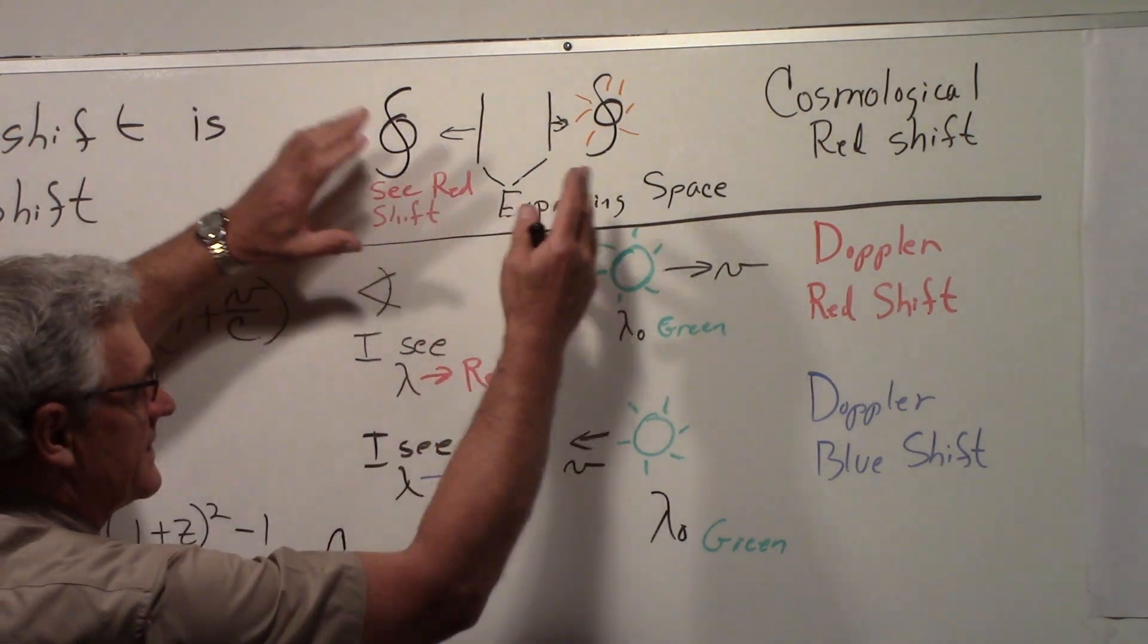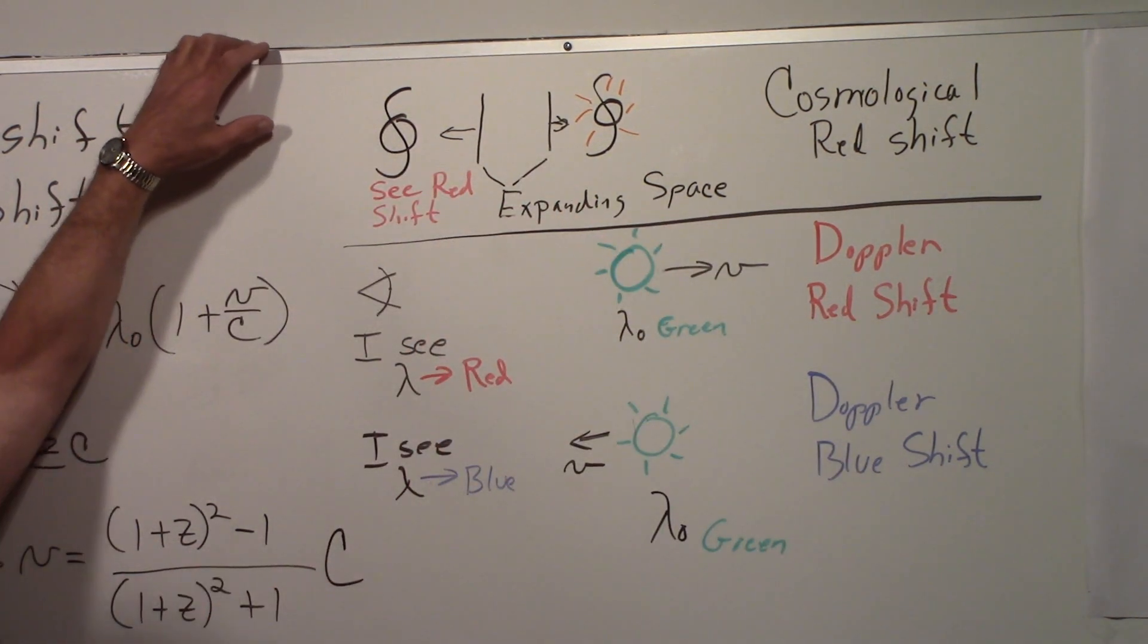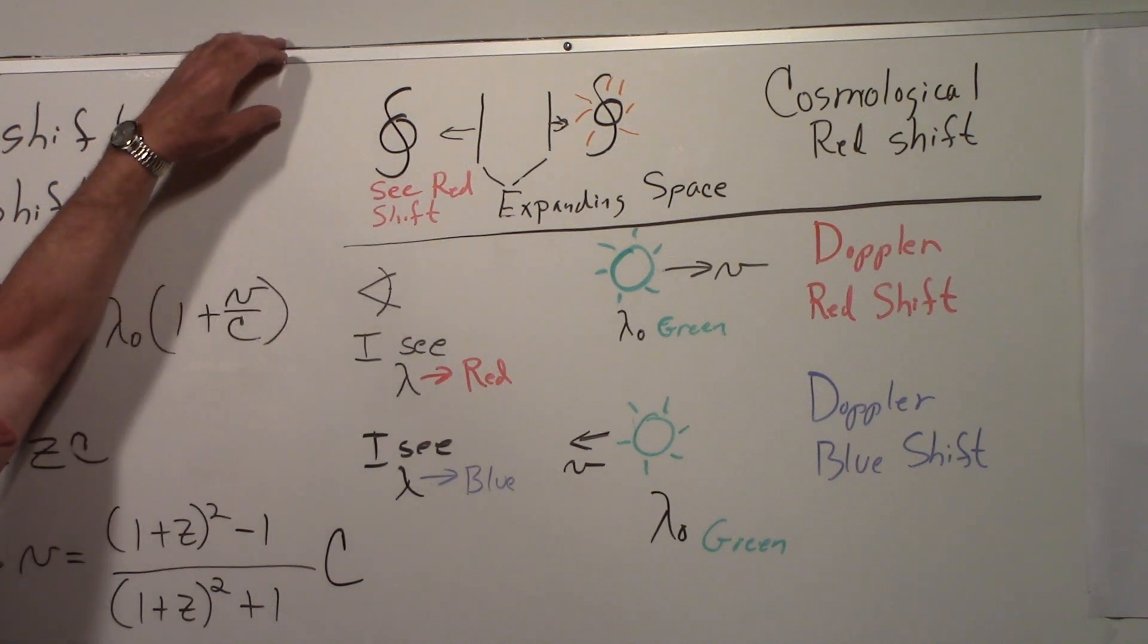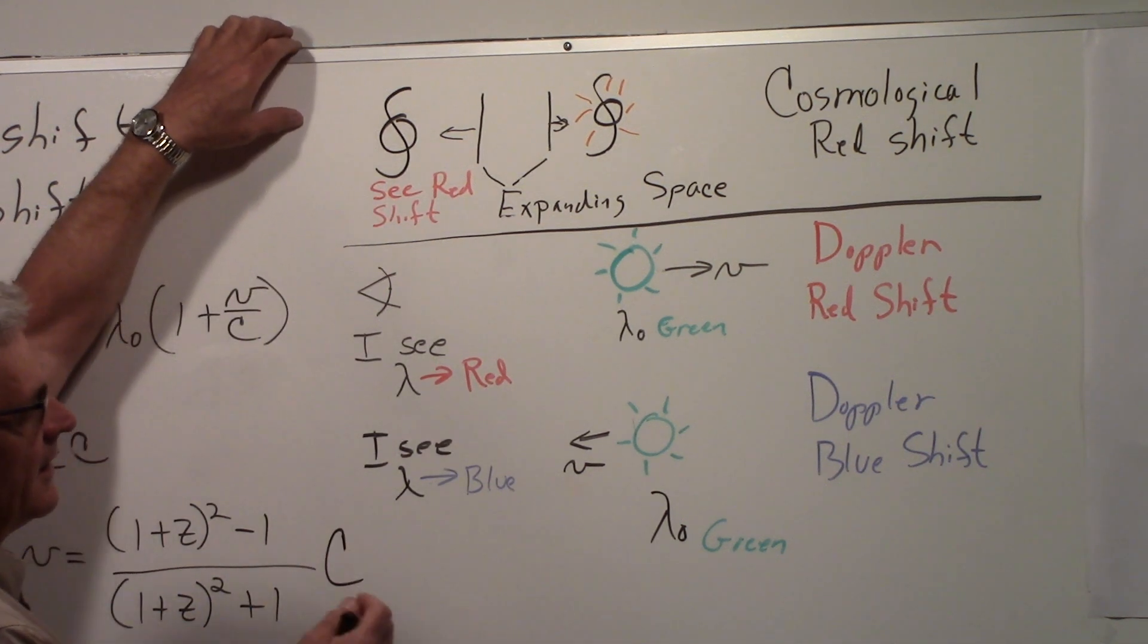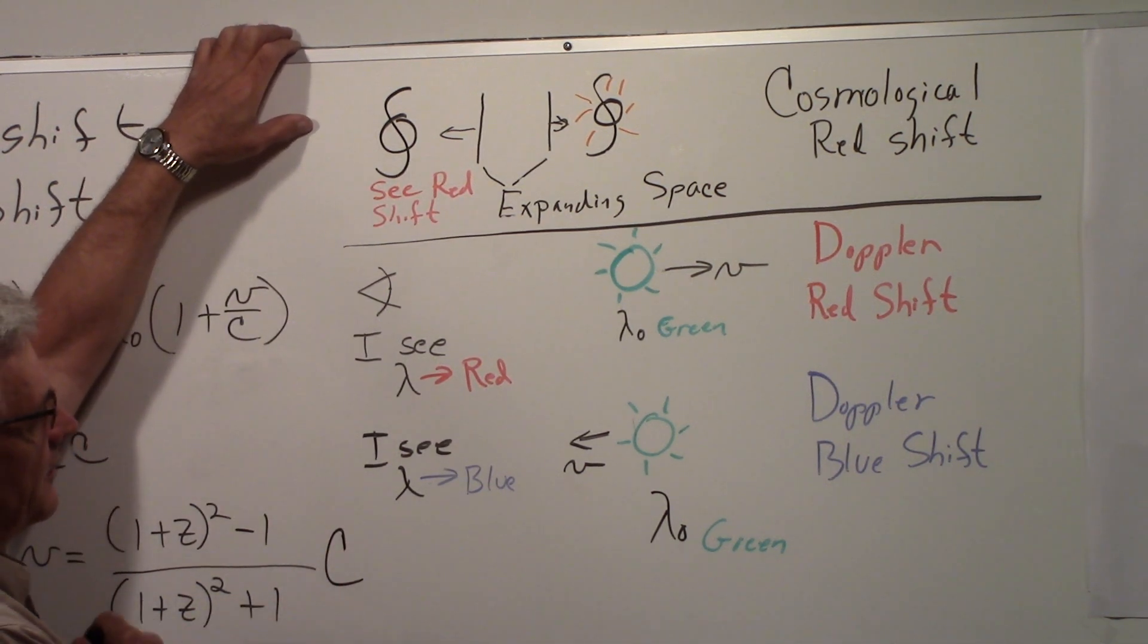And that's the cosmological redshift, and it's happening because space is expanding. Light travels through space and gets stretched.